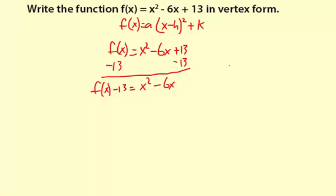-6 divided by 2 is -3. -3 squared is 9. So what we need to do is add 9 to make a perfect square polynomial. We'll add 9 to both sides of the equation.